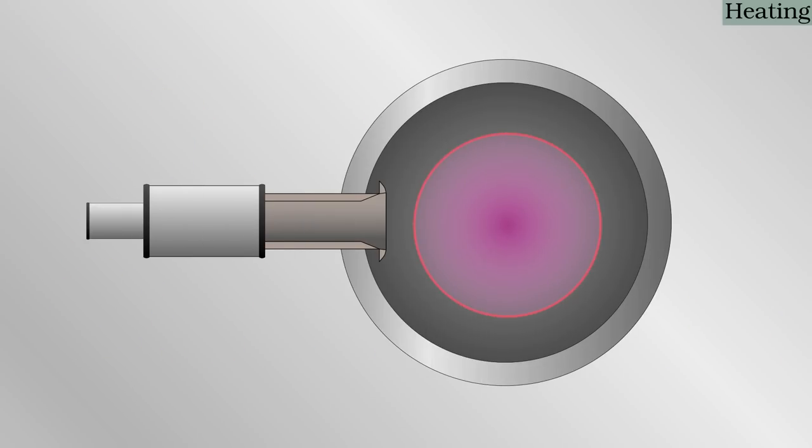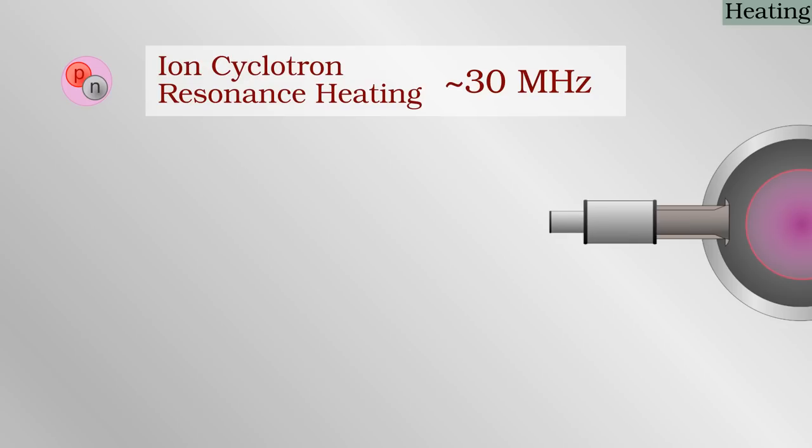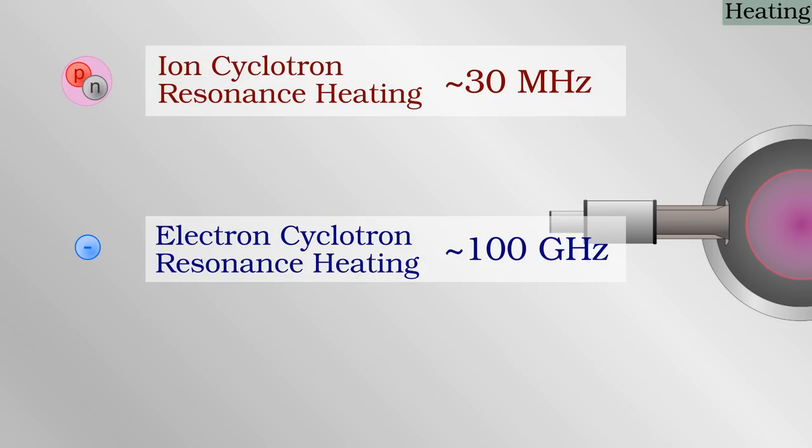Charged particles orbit around magnetic field lines at the so-called cyclotron frequency, which depends on the magnetic field strength and their mass. Electromagnetic waves, such as those used in a microwave oven, are absorbed if they are of a matching frequency. In such a case, they resonate with the orbiting particles. Energy can be deposited in the plasma by targeting a specific type of particle in a location with a particular magnetic field where the resonance occurs. Ion cyclotron resonance heating is done by radio frequency waves of tens of megahertz. Electron cyclotron by microwaves in the hundreds of gigahertz range. The so-called lower hybrid resonance between these two is also often used.